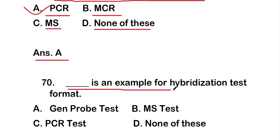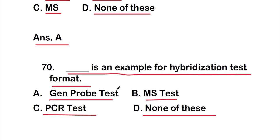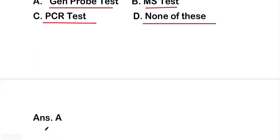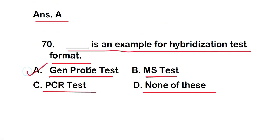Question 70: Dash is an example of a hybridization test format — options: A: Gen Probe test, B: mass spectrometry test, C: PCR test, D: none of the above. The right answer is option A: the Gen Probe test is an example of a hybridization test format.